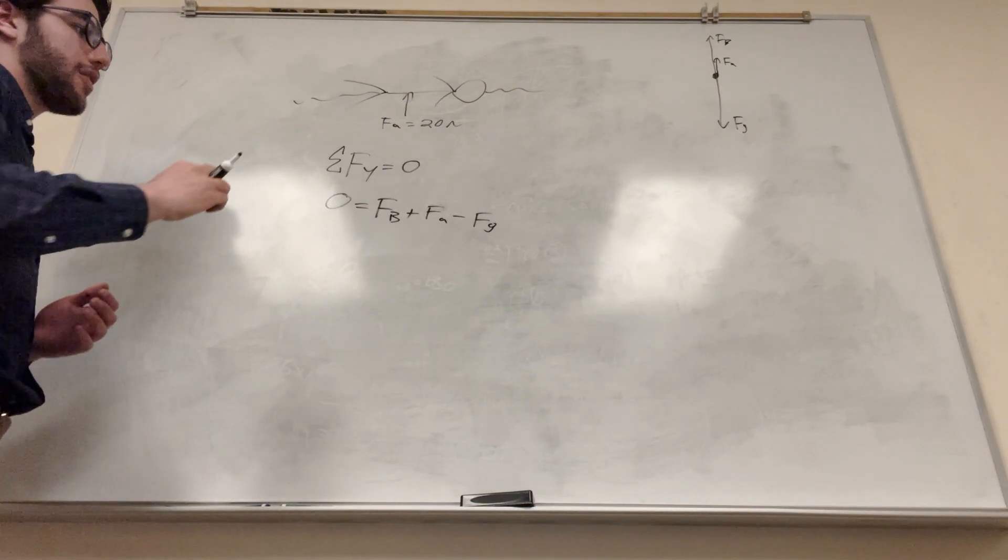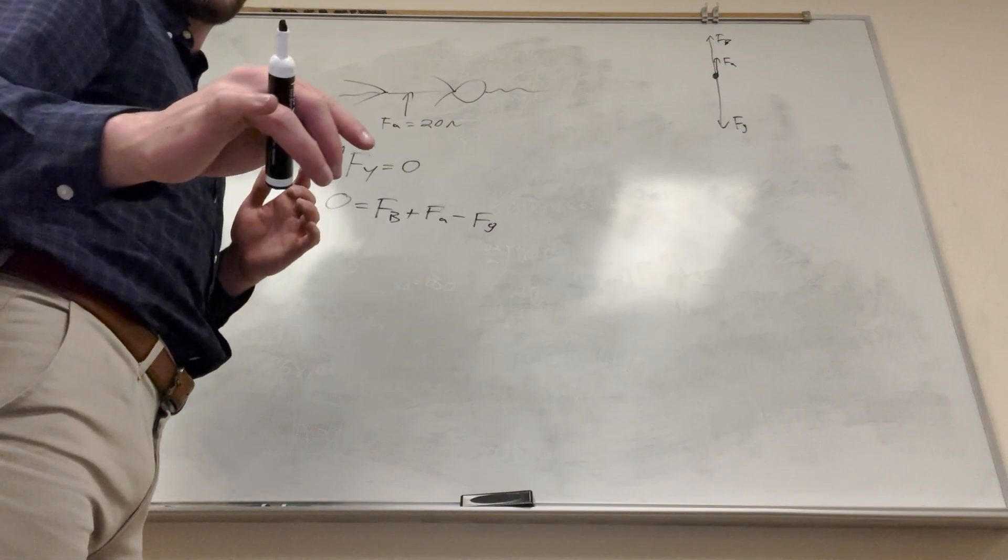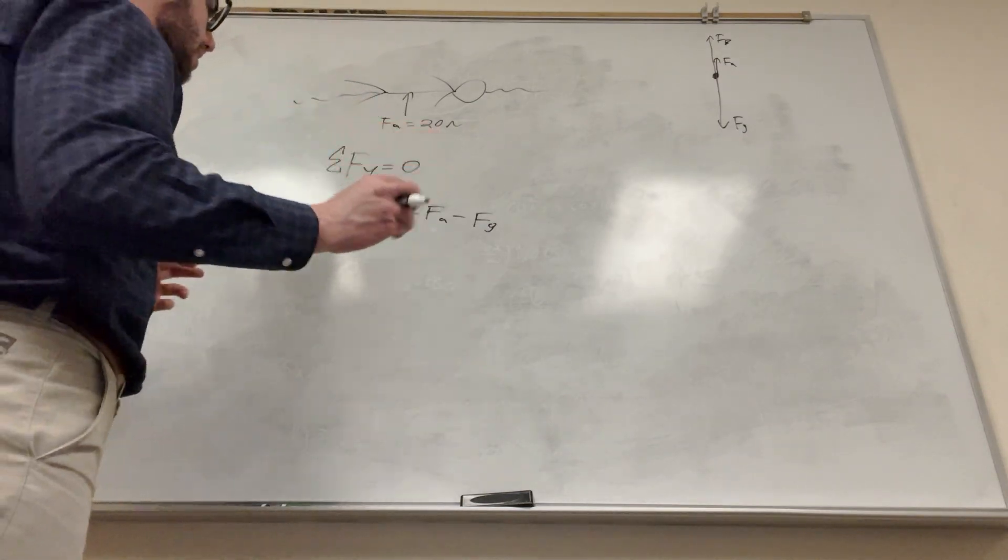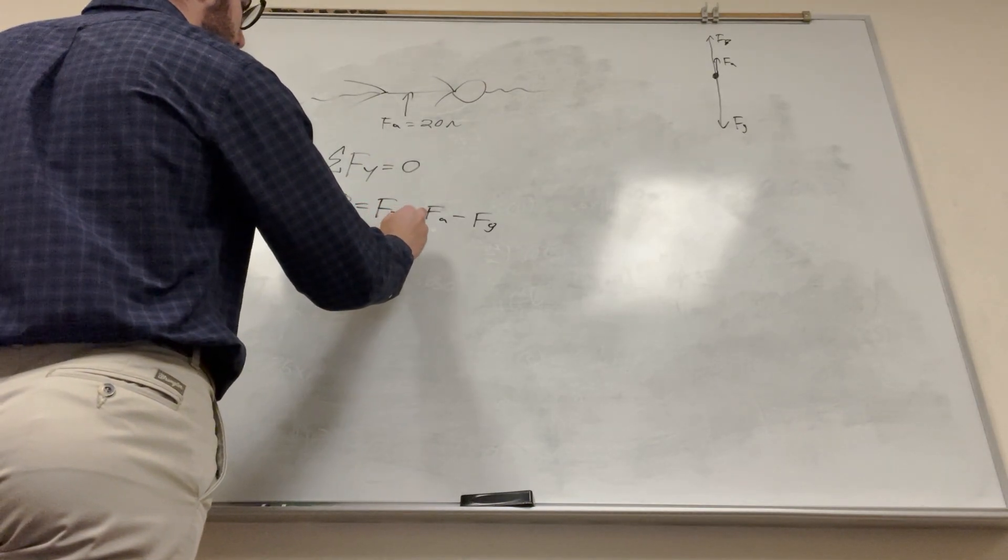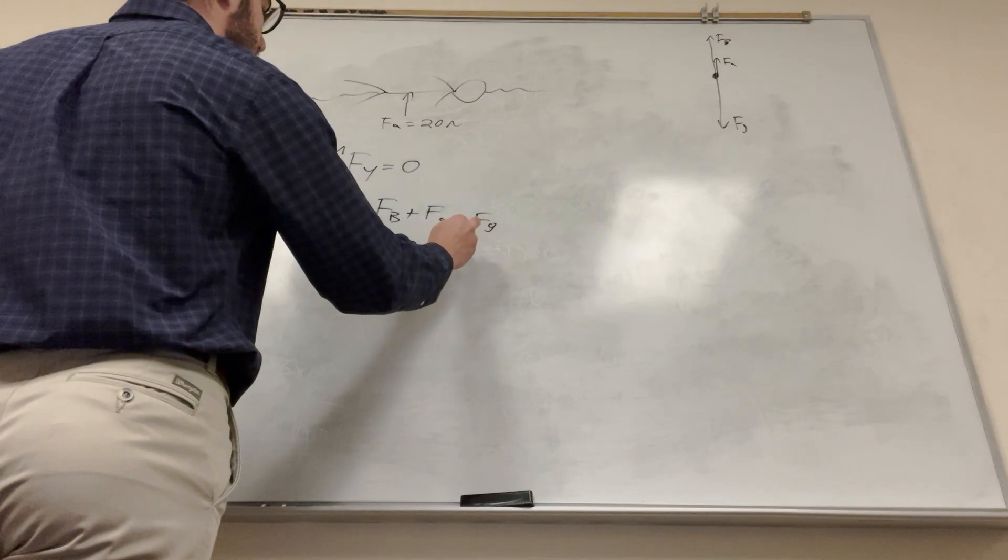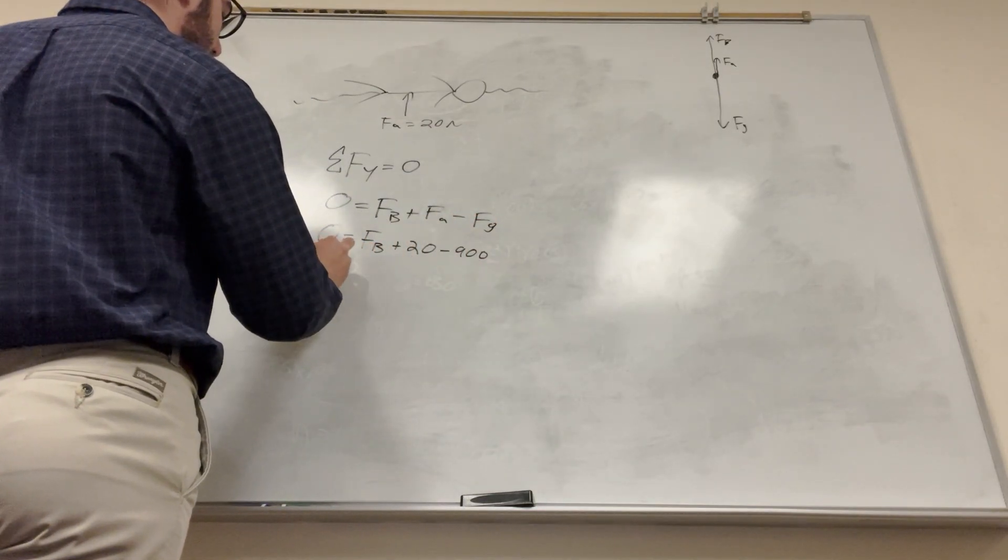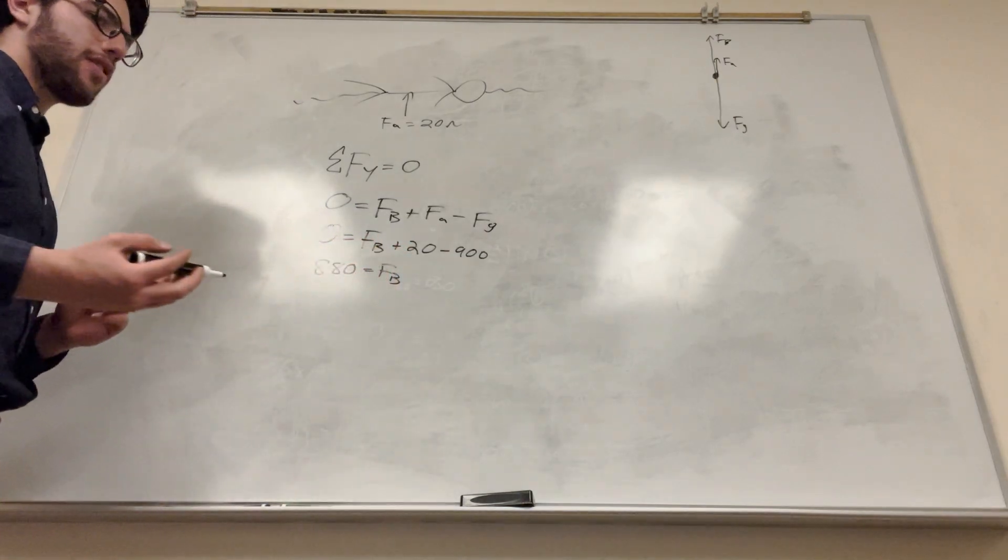This is going to be a true statement. So we know these things, right? We know force of gravity because he said he's 900 newtons. And we know the upward force is 20 newtons. So we can just plug all this in. So zero is equal to force of buoyancy plus 20 minus 900. So we're going to get basically 880 is equal to force of buoyancy. Perfect. So we found the force of buoyancy.